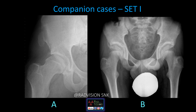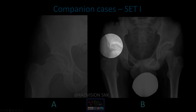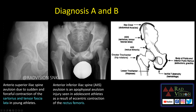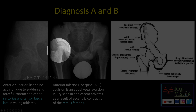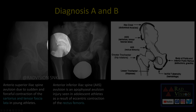The first case shows antero-superior iliac spine avulsion, and the second shows antero-inferior iliac spine avulsion. Antero-superior iliac spine avulsion is due to sudden and forceful contraction of the sartorius and tensor fascia latae muscles, commonly seen in young athletes. Antero-inferior iliac spine avulsion is due to injury and eccentric contraction of the rectus femoris muscles.